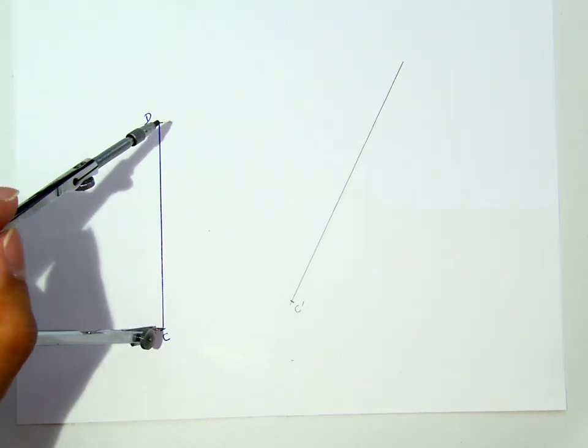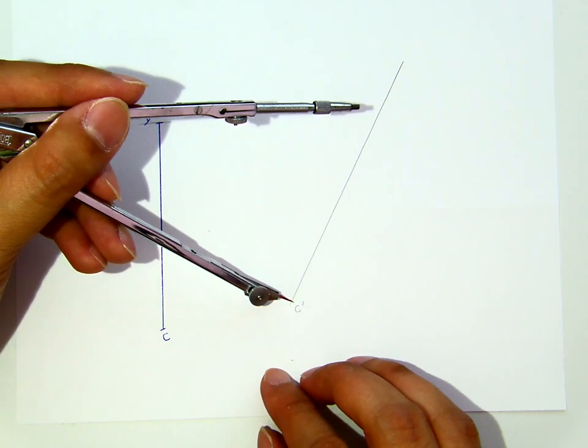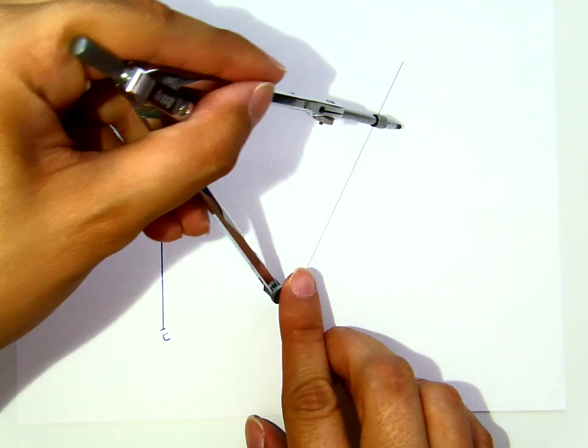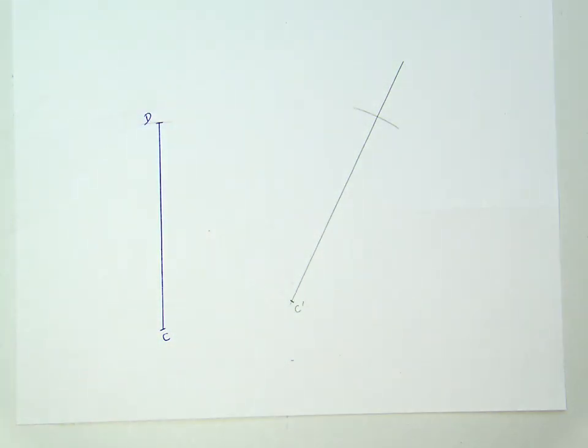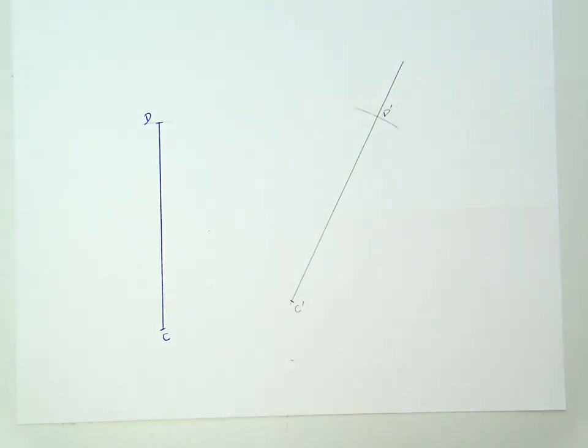Now, then, I will use this compass opening here. Cut it there. Voila! We get the copy of point D on this new line.